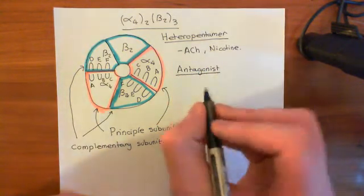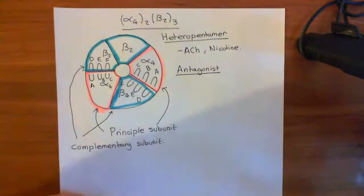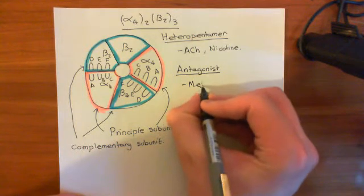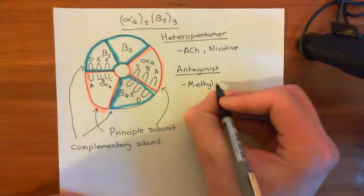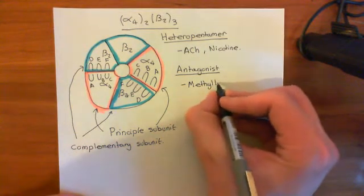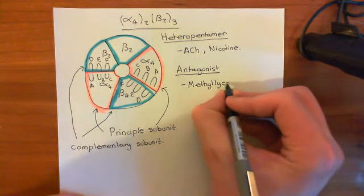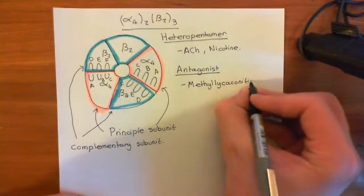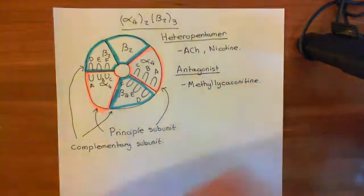And then an antagonist, this form of the receptor is not sensitive to alpha-bungarotoxin. So it's like the ganglionic form in that sense. It will not have its binding site blocked by alpha-bungarotoxin, but it is still sensitive to this compound, methyl-lyca-conitine. It will have its binding site blocked by methyl-lyca-conitine.